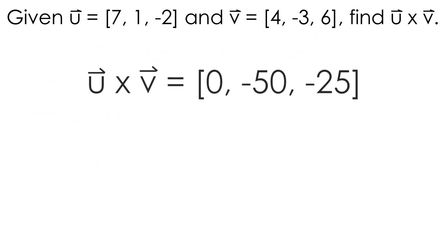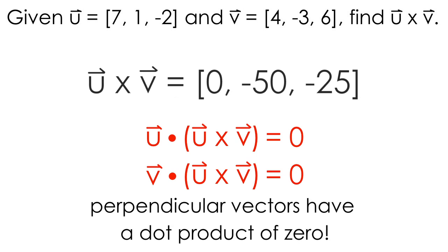One way to check that this is true is to calculate the dot product of u with the cross product, as well as v with the cross product. If you've calculated your cross product correctly without any errors, you should get 0 in both cases, as two vectors that are perpendicular have a dot product of 0.